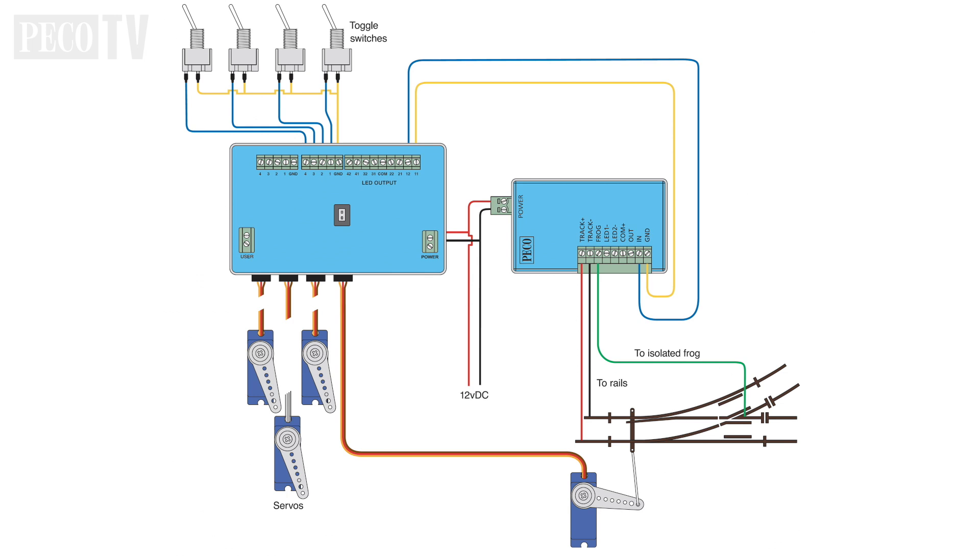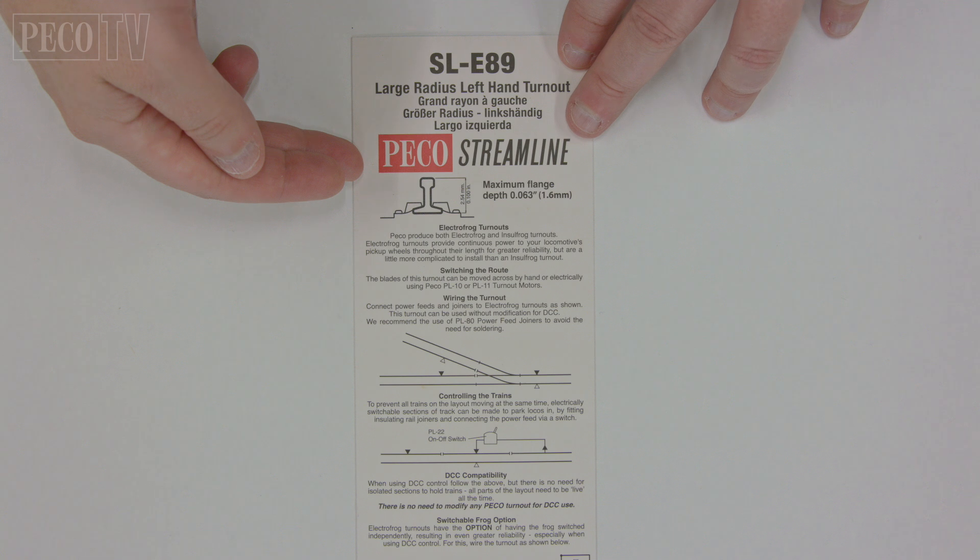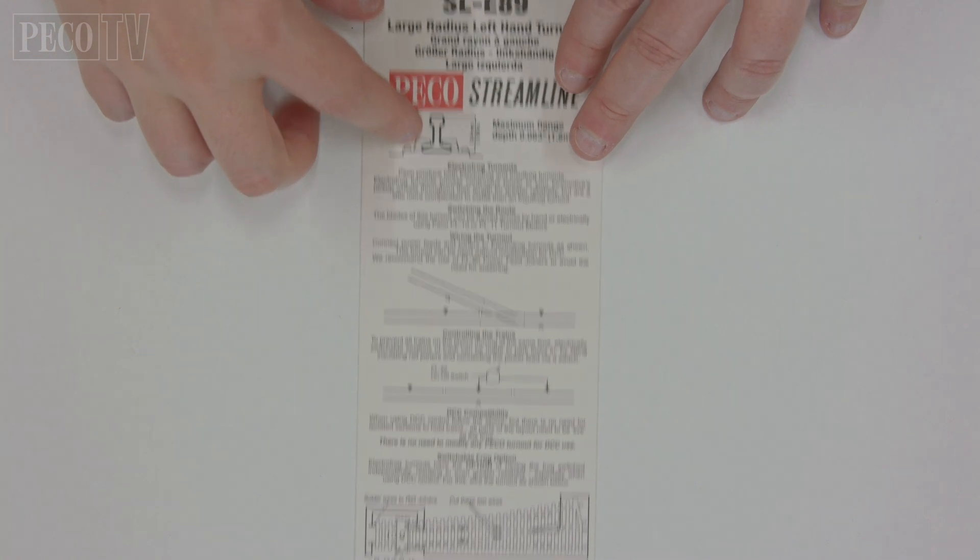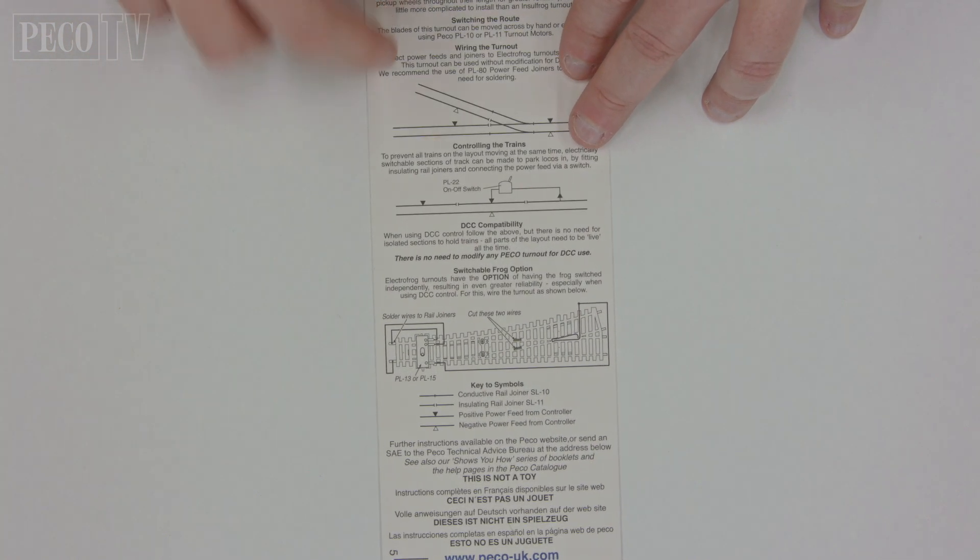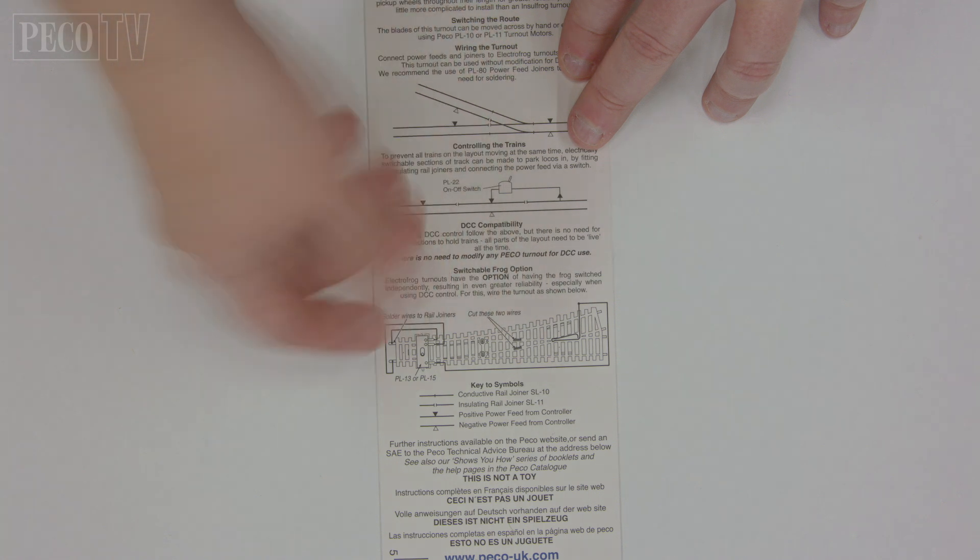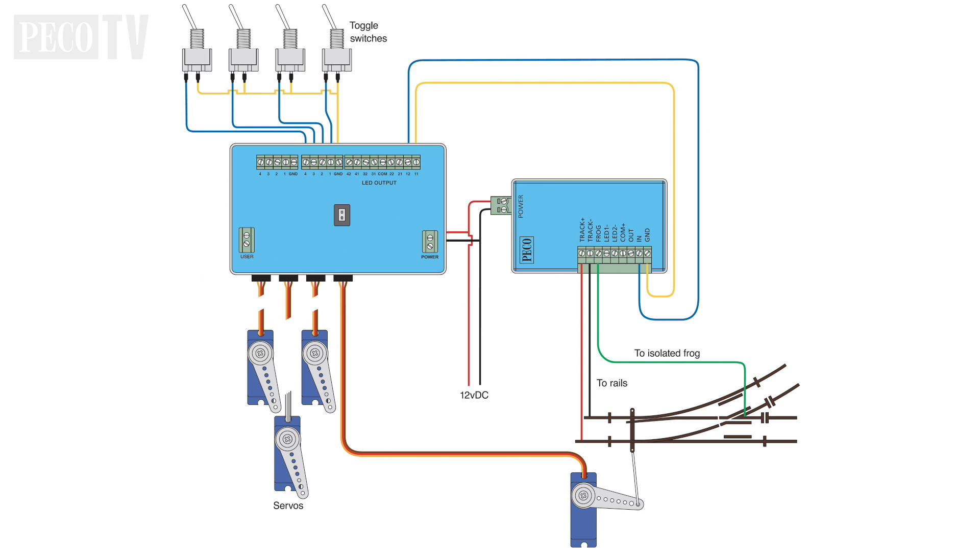However, this will not affect the smart frog's ability to work with DCC track feed. When laying the track, follow the instructions included with the turnout to ensure the isolated rail joiners and power feeds are used correctly. Connect the smart frog as shown in the diagram. This shows the setup for a turnout being operated by one servo.